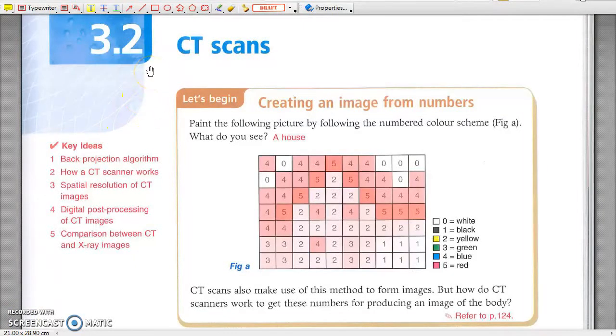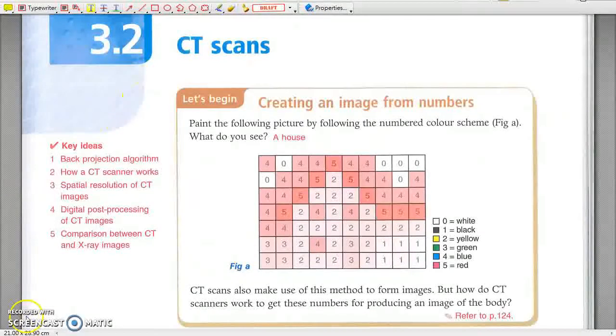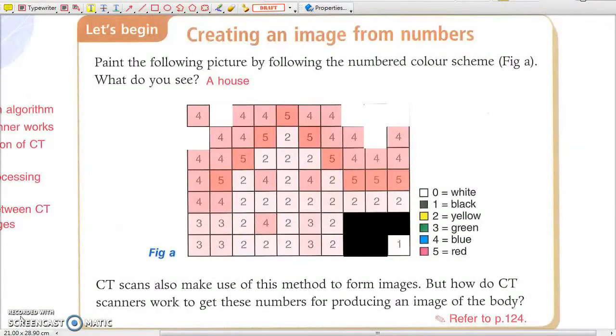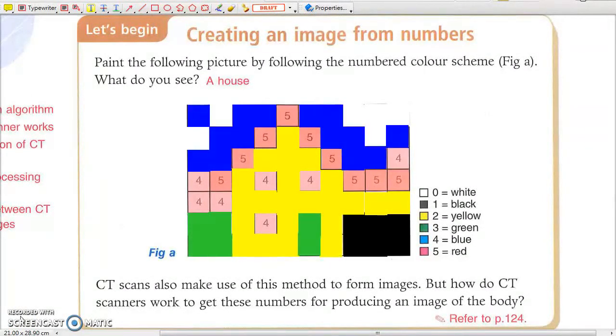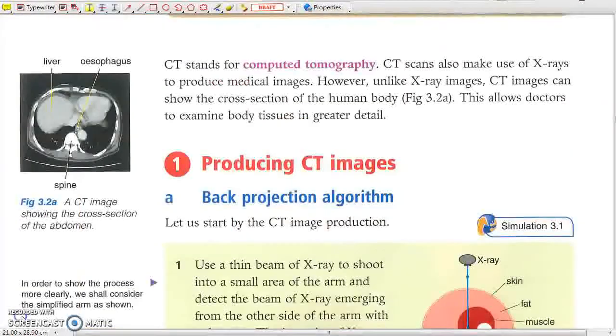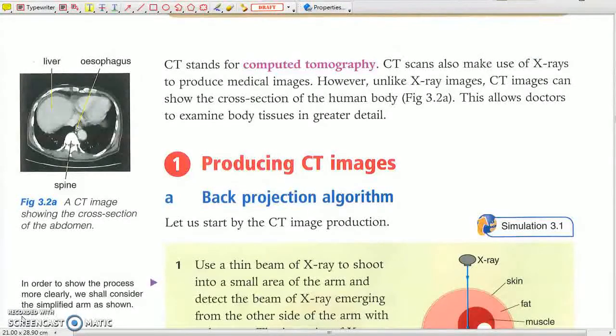Chapter 3.2 CT Scans. If somehow the attenuation coefficient of different positions inside a patient's body is determined, it may be possible to reconstruct the tissue structure of the patient and represent it in the form of a 3D model to be shown on the computer screen. CT stands for computer tomography, in which tomography means creating images.